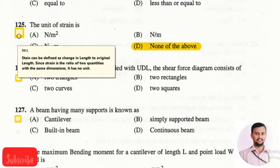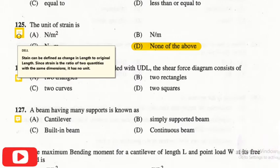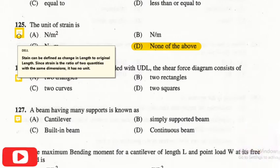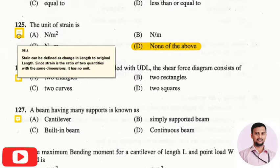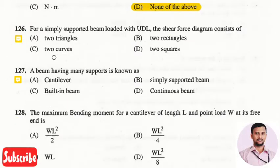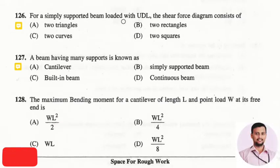The next question is: the unit of strain is? The answer is none of the above, because strain is defined as the change in length divided by original length. Both quantities have the same dimension — meters — so they cancel out. Therefore, strain has no unit; it is dimensionless.